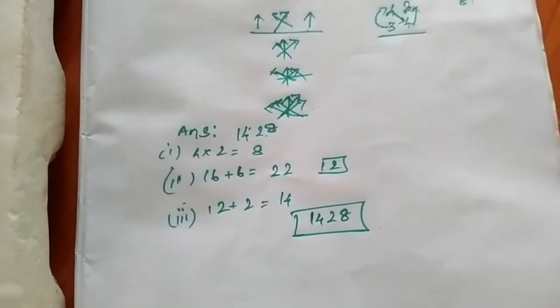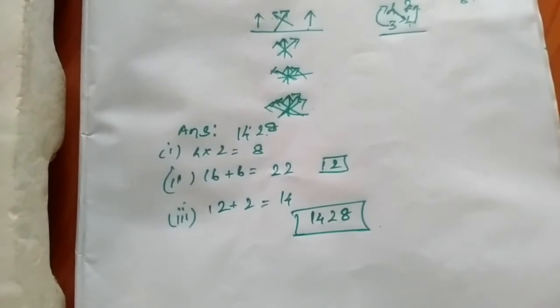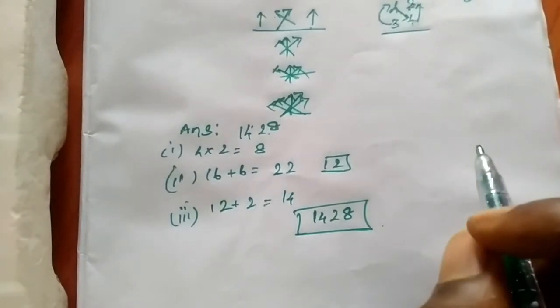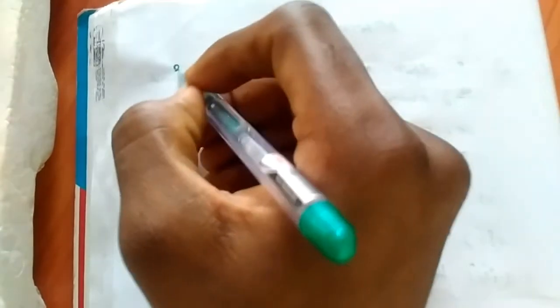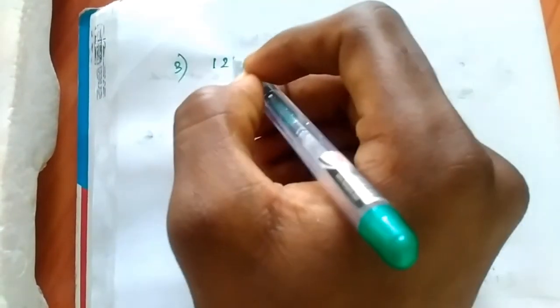This is the answer — this is the two-digit number method. Now for the 3-digit number, I said — wait, page 10.